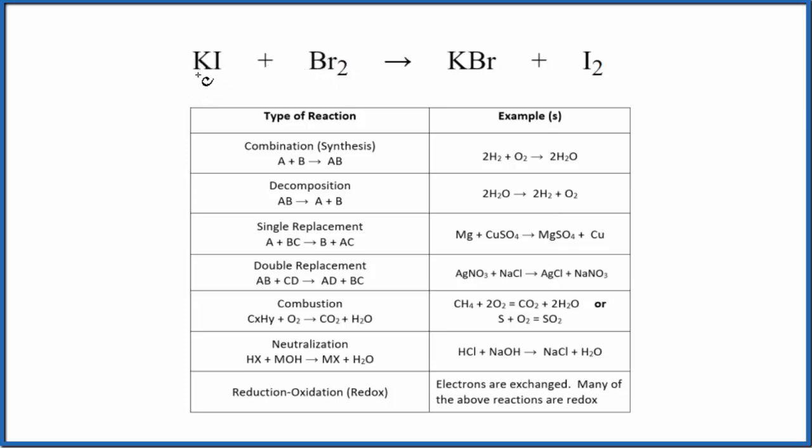When we have two things here, this potassium and the iodine, and then just one single type of element here, we're thinking that it's probably going to be a single displacement reaction.